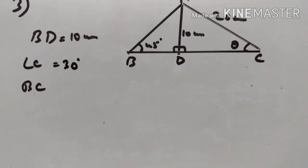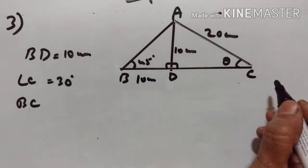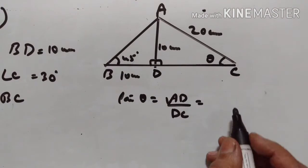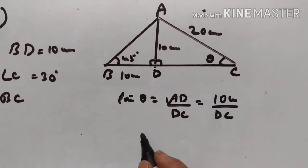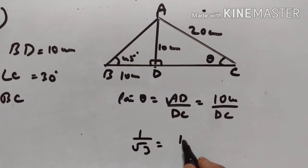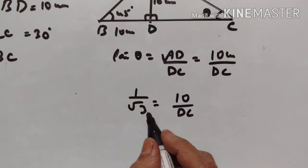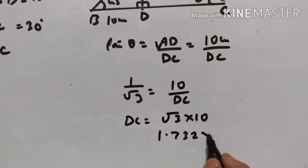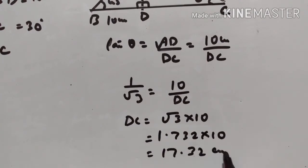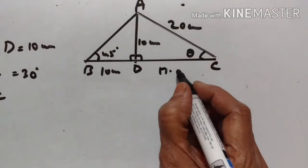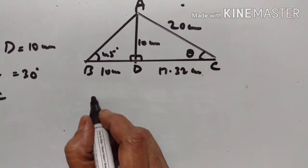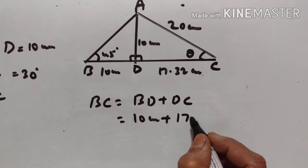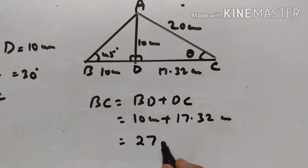Now we have to find BC. We know BD is equal to 10 cm, and we have to find CD. Tan θ equals AD upon DC. AD is 10 cm upon DC, and tan 30° equals 1 upon √3 equals 10 upon DC. So DC equals √3 into 10. √3 is equal to 1.732, so 1.732 into 10 equals 17.32 cm. Therefore BC equals BD plus DC, which is 10 cm plus 17.32 cm, equals 27.32 cm.